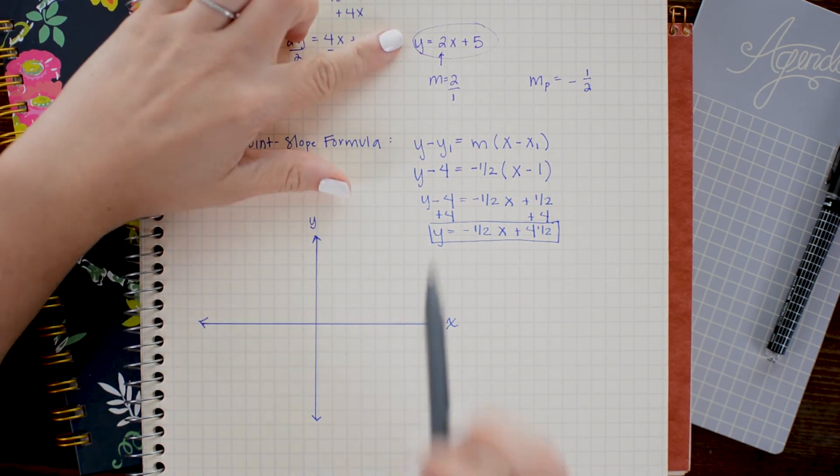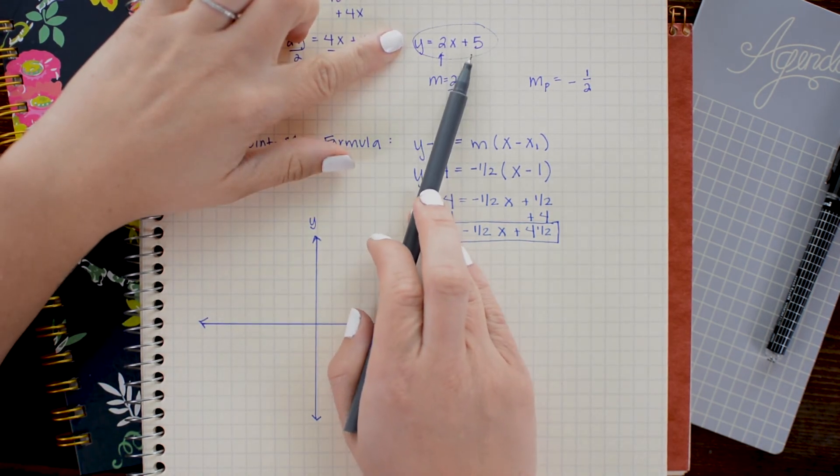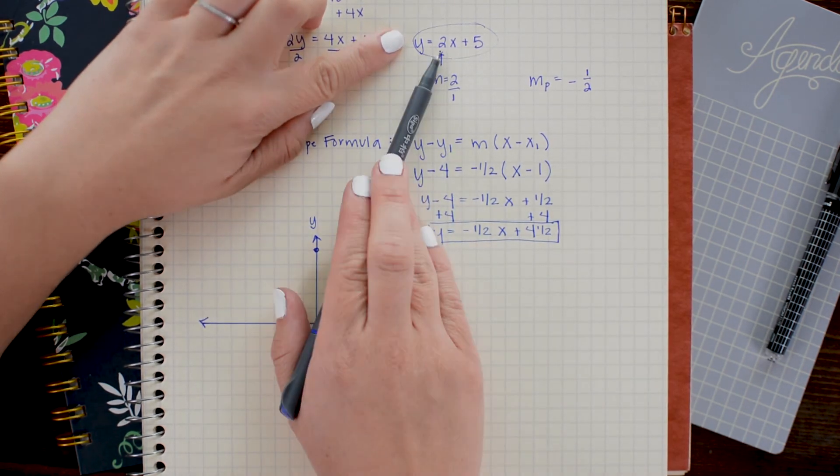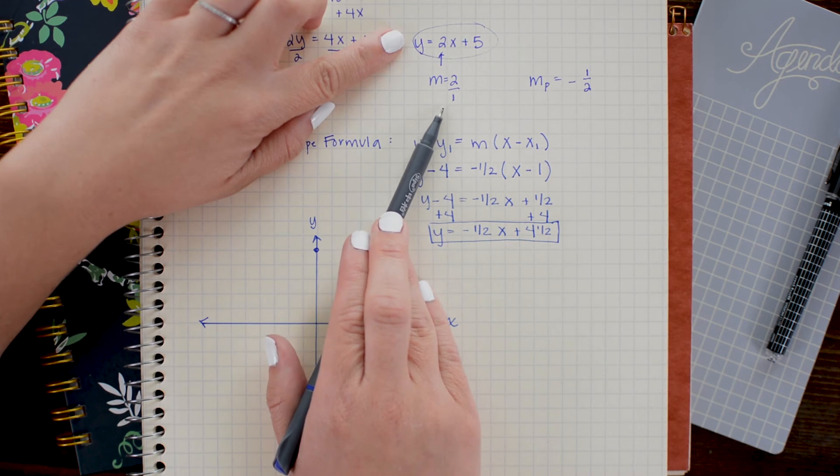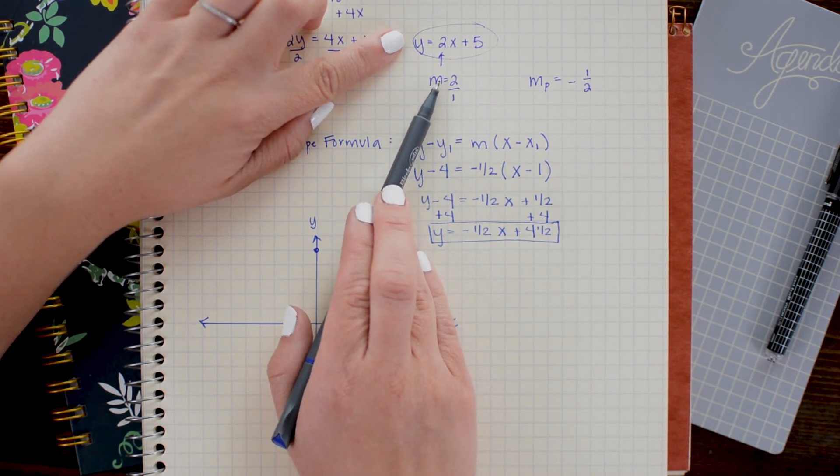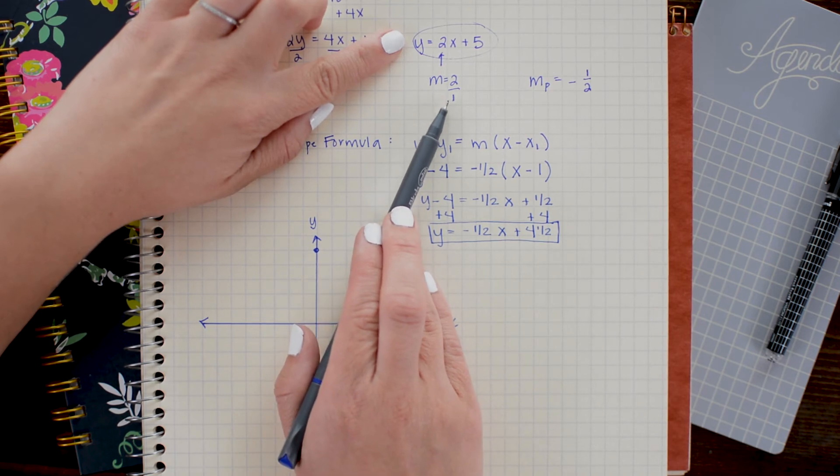So to graph our first line, I'm simply going to start by marking the y-intercept, which is at positive 5. Then I'm going to apply a slope of 2, which is really 2 over 1. And remember, the numerator represents our rise, or our change in y, and the denominator represents our run, or change in x.